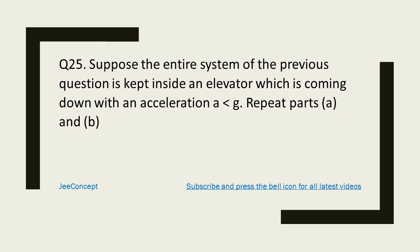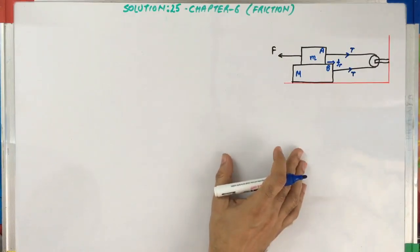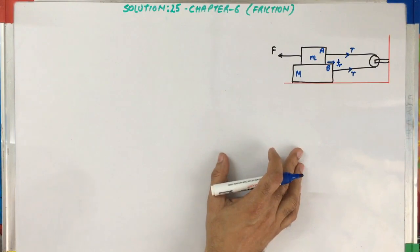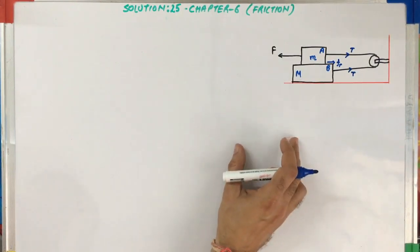Hello friends, this is the solution video for question number 25, chapter 6, SC Varma. The problem statement says: suppose the entire system of the previous question is kept inside an elevator which is coming down with an acceleration a less than g — repeat parts a and b. This problem is an extension of the previous problem, so if you haven't seen the previous video, you can click on the link above to understand the situation in question number 24.